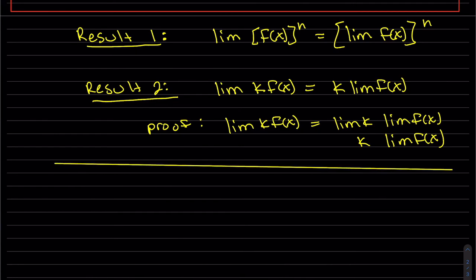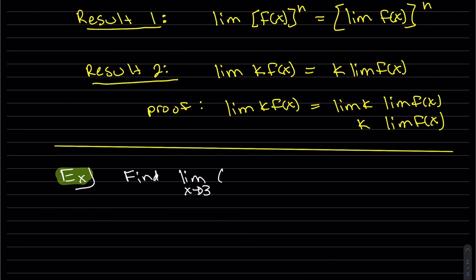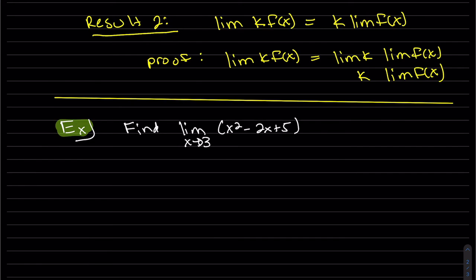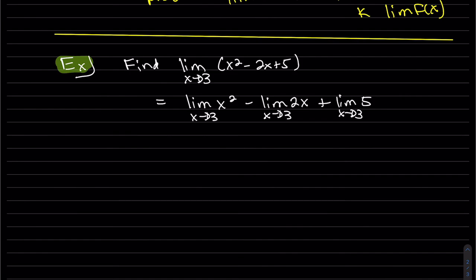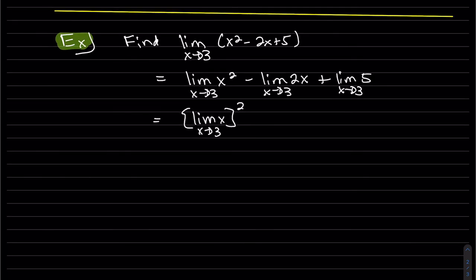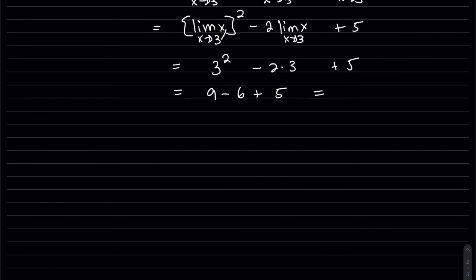Now let's do some examples. We're going to find the limit using these properties. The limit of x squared: we can take the limit of x as x approaches 3 and then square it. We know the limit of x equals 3, so we get 3 squared. Here we factor out the constant, plug 3 in, and the limit of a constant is just the constant. That equals 8.